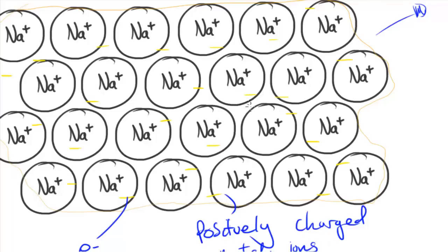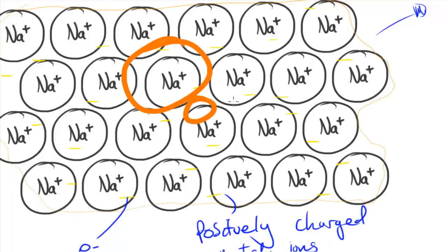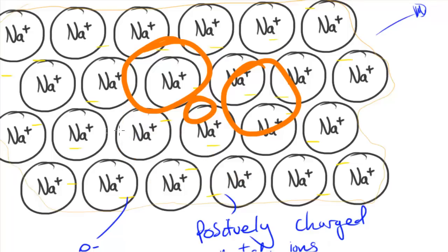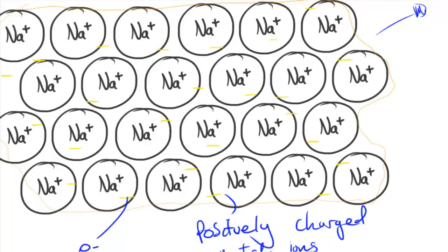If we put alloys into the structure — a mix of different kinds of metals with different-sized ions — the structure becomes quite difficult to slide because we might have big and small ions mixed together. This makes it harder to bend and more likely to snap. However, there is a good side: we can use that property to strengthen the alloy.